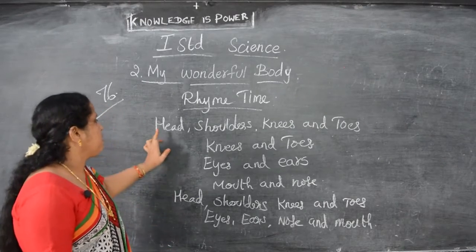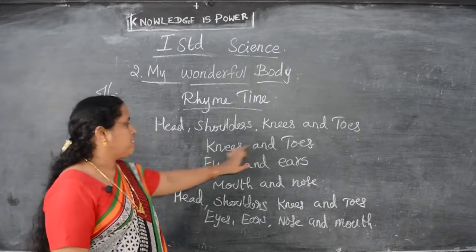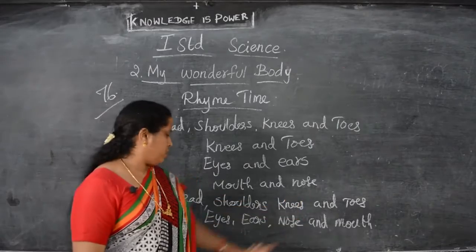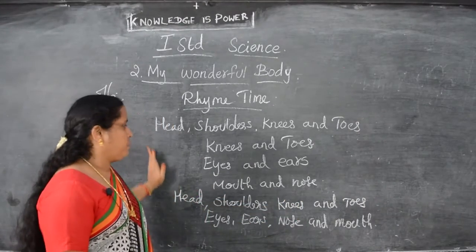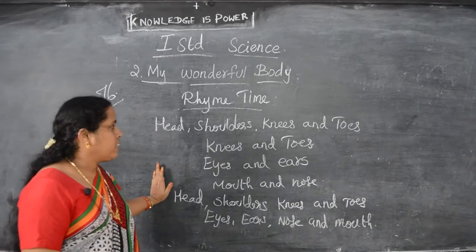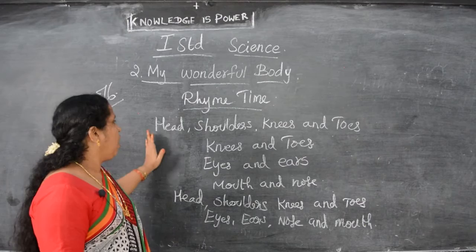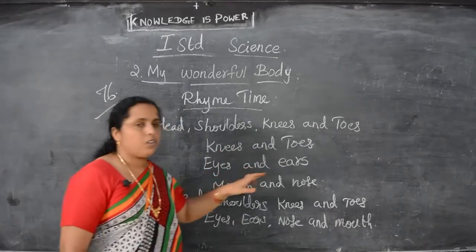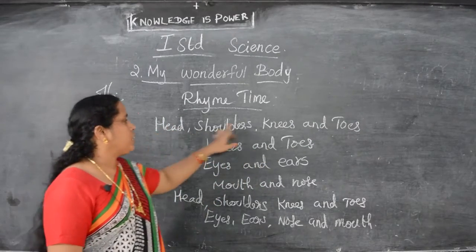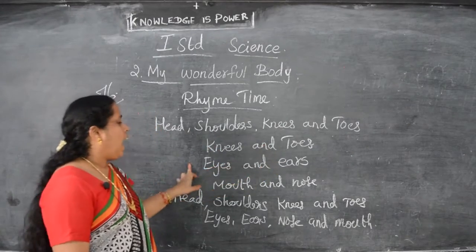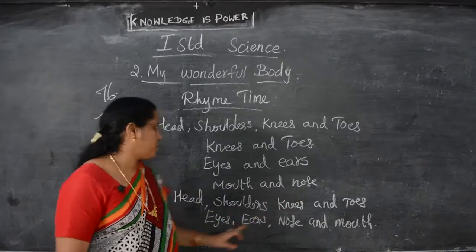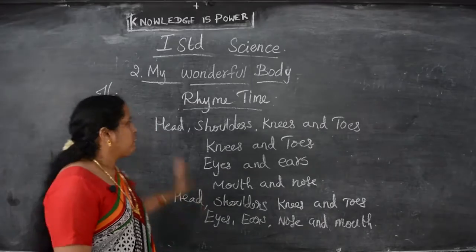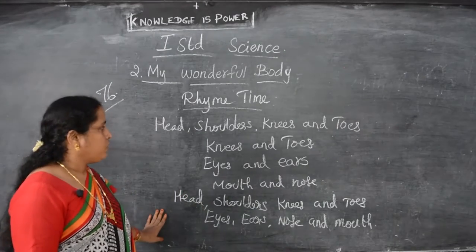This is the rhyme: head, shoulders, knees and toes, knees and toes, eyes and ears, mouth and nose. Head, shoulders, knees and toes — eyes, ears, nose and mouth. This is the rhyme — you should learn this one.